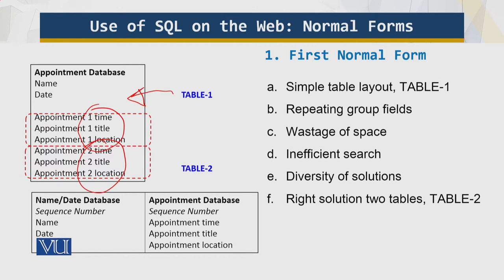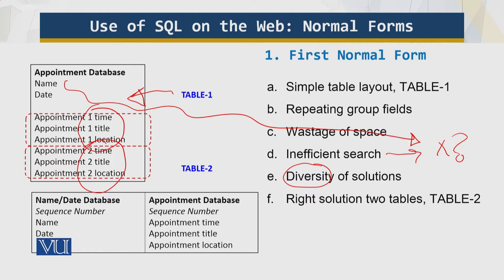If we perform a search on name — say name equals X — there can be multiple people with that value, so there is ambiguity. Everybody comes up with their own solution, and that diversity of solutions is not very formal. Some people suggest putting multiple values in a column, which is against the relational model. The best and correct solution is two tables.